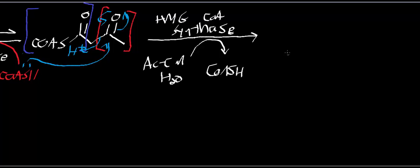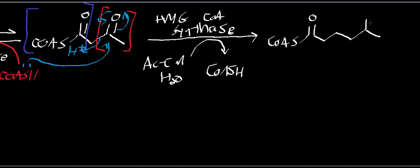To understand what HMG-CoA is, let's look at what a glutaryl-CoA group is. A glutarate is essentially a five-carbon dicarboxylate in which both carboxylates are on the terminal carbons — you've seen alpha-ketoglutarate, which is a glutarate. Glutaryl-CoA has five carbons, with the alpha and beta carbons labeled. Beta-hydroxy-methylglutaryl-CoA has a methyl group and a hydroxyl group at the beta position — that's HMG-CoA.